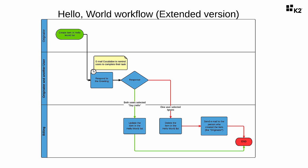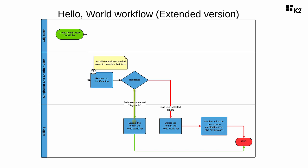For changes in the existing workflow, we're going to edit the Respond to Greeting task and add another user to this task. We will then configure the outcomes for this step so that both of the users will need to say hello to the greeting before the workflow continues down the Say Hello path. But if any one of the users selects ignore, the workflow should not wait for the other user's input to follow the ignore path. This is basically the same thing as requiring all assignees to approve an approval step in a workflow, or escape from the approval step if any one of the approvers rejects the request.